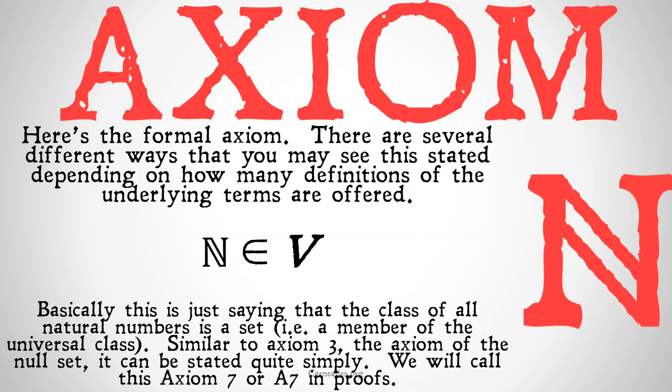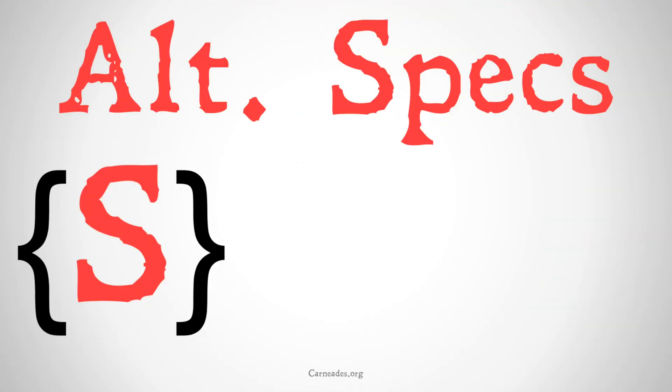Here's the formal axiom. There are several different ways you might see this stated, depending on how many definitions of the underlying terms are offered. Basically, this is just saying that the class of all natural numbers is a set — in other words, a member of the universal class. Similar to axiom 3, the axiom of the null set, it can be stated quite simply. We're going to call this axiom 7, or A7 in proofs.